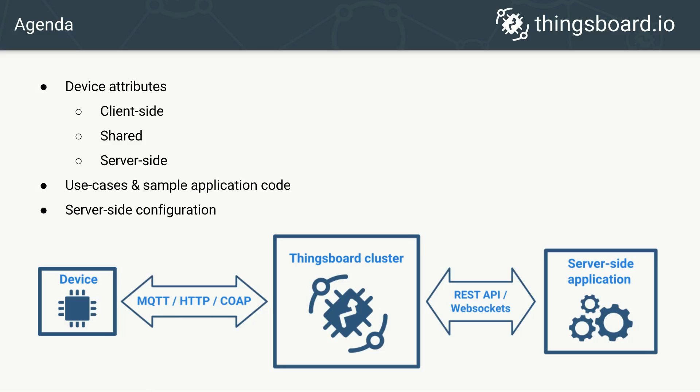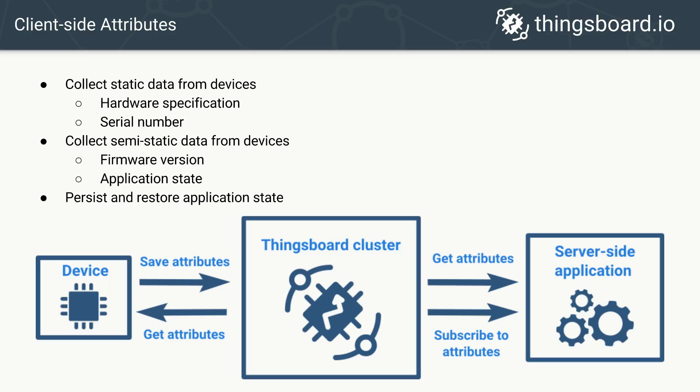We will start from client-side attributes. Client-side attributes are reported by device applications to the server. Server-side applications may fetch the latest values of these attributes or simply subscribe to attribute updates. They may be used to upload and store semi-static or static data associated with the device. If you want to upload data that changes frequently, you should consider the telemetry feature, which is optimized for high frequency of data upload as well as for storage and processing.